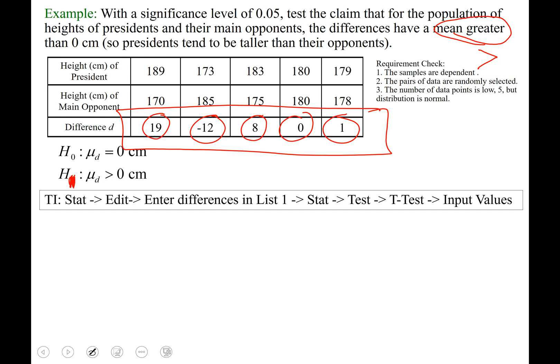Clear out any old data you have there by hovering over list 1 and hitting clear. Enter. And then enter that. Alright, so my differences are 19, negative 12. Oh! Pause.